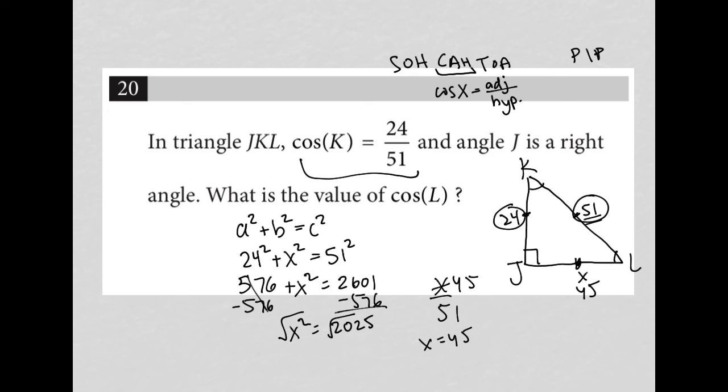So that means the cosine of L, again, the adjacent side, which is here, 45, over the hypotenuse, which is there, is 45 over 51. There is our solution.